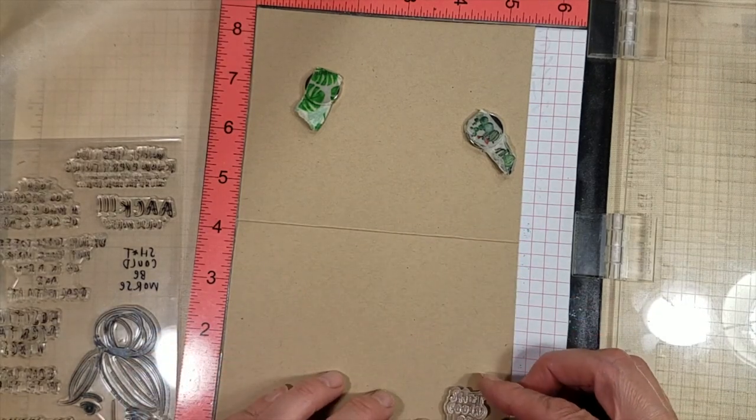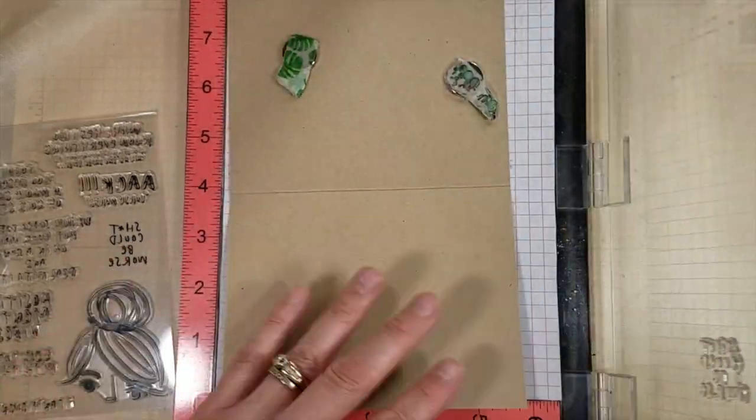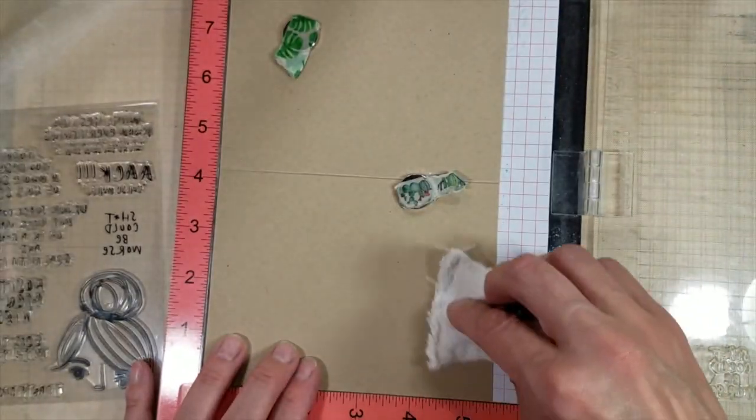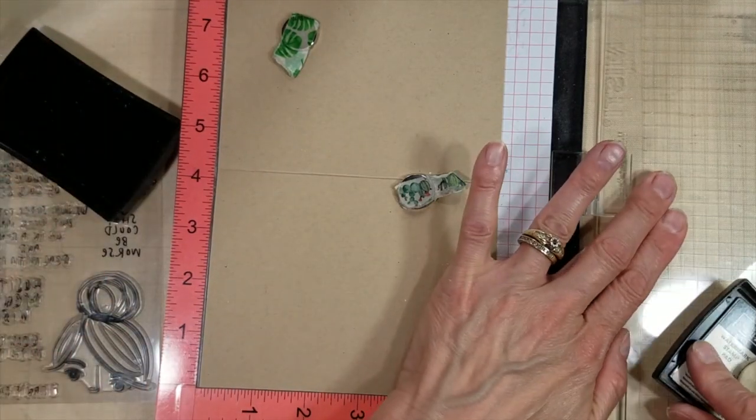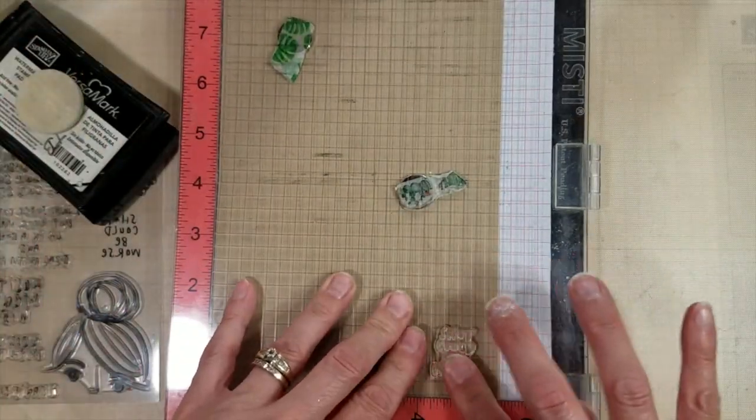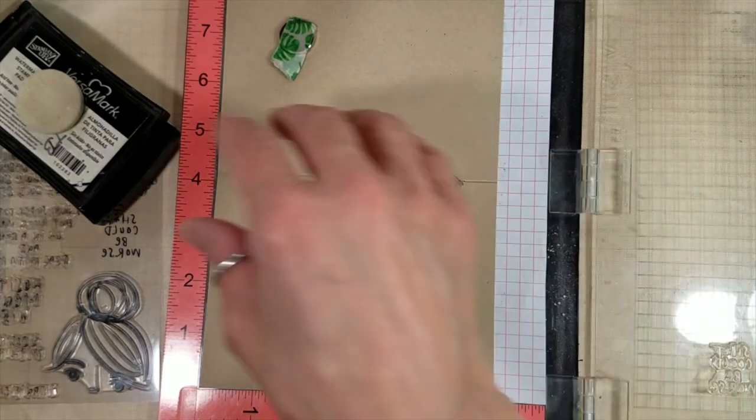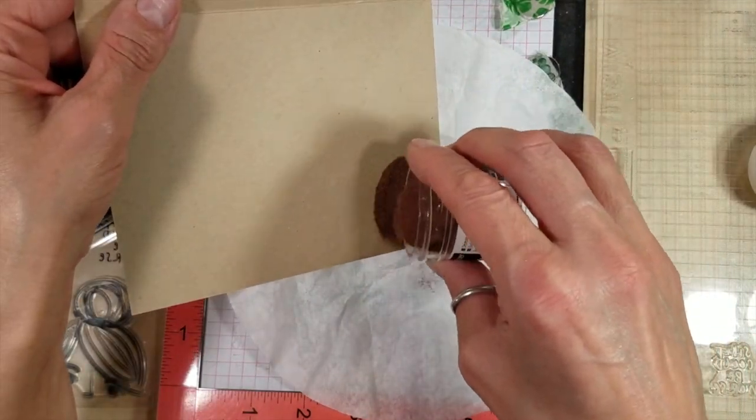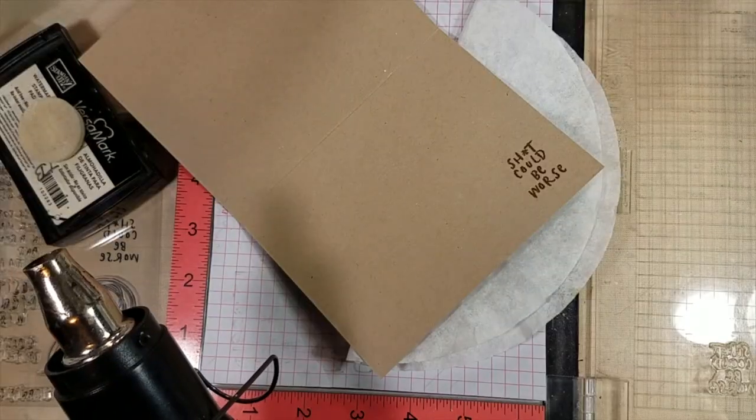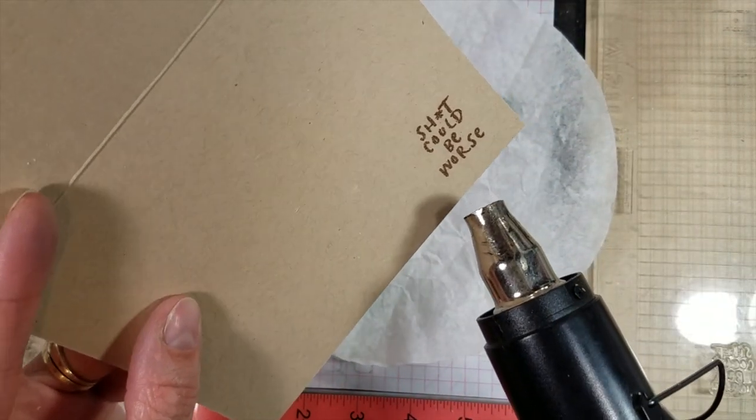And I'm trying to decide where I want that sentiment on the inside. I'm going to use my anti-static powder tool again. Take out my Versamark ink. And we're going to stamp that. I think I stamped it twice. But you didn't need to see both times, I'm sure. And we're going to sprinkle on the Copper Embossing Powder and heat set that quick.